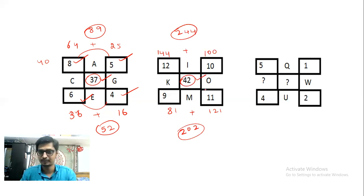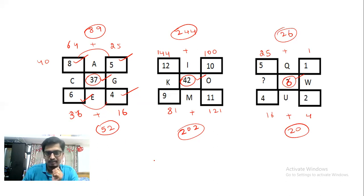Now similarly, you have to solve for the third flower also. So 5 square is 25, 1 square is 1. If I add these two numbers, I get 26. And 4 square is 16, and 2 square is 4. So if I add these two numbers, then I get 20. Now I have to look at the difference between 26 and 20. I get 6. So the answer for this question mark is 6.